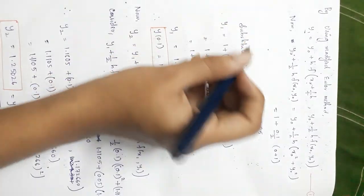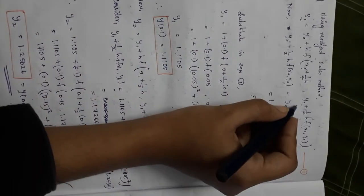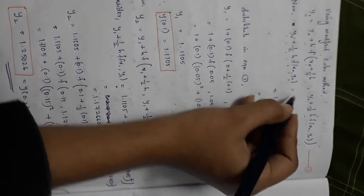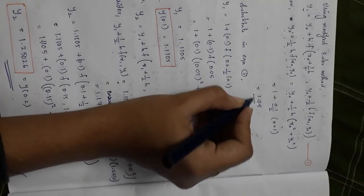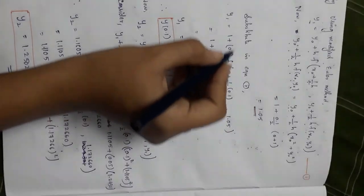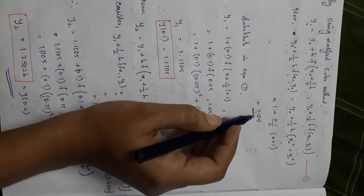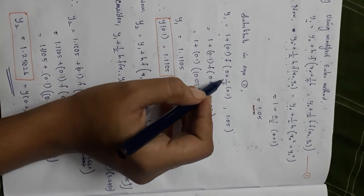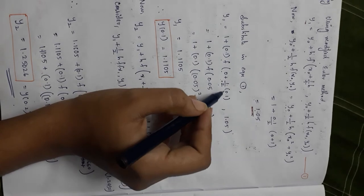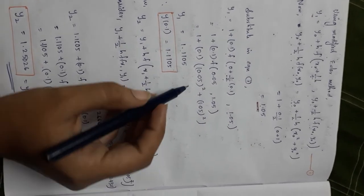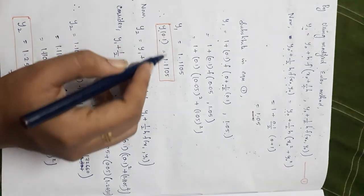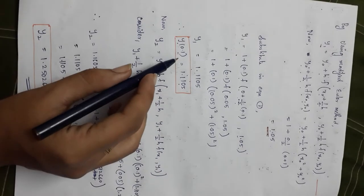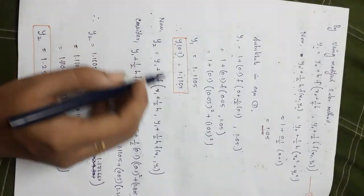Substituting n = 0 into the formula, first we compute y₀ + (h/2)·f(x₀, y₀) = 1 + 0.05·(0² + 1²) = 1.05. Then y₁ = 1 + 0.1·f(0 + h/2, 1.05) = 1.1105. Therefore y(0.1) = y₁ = 1.1105.